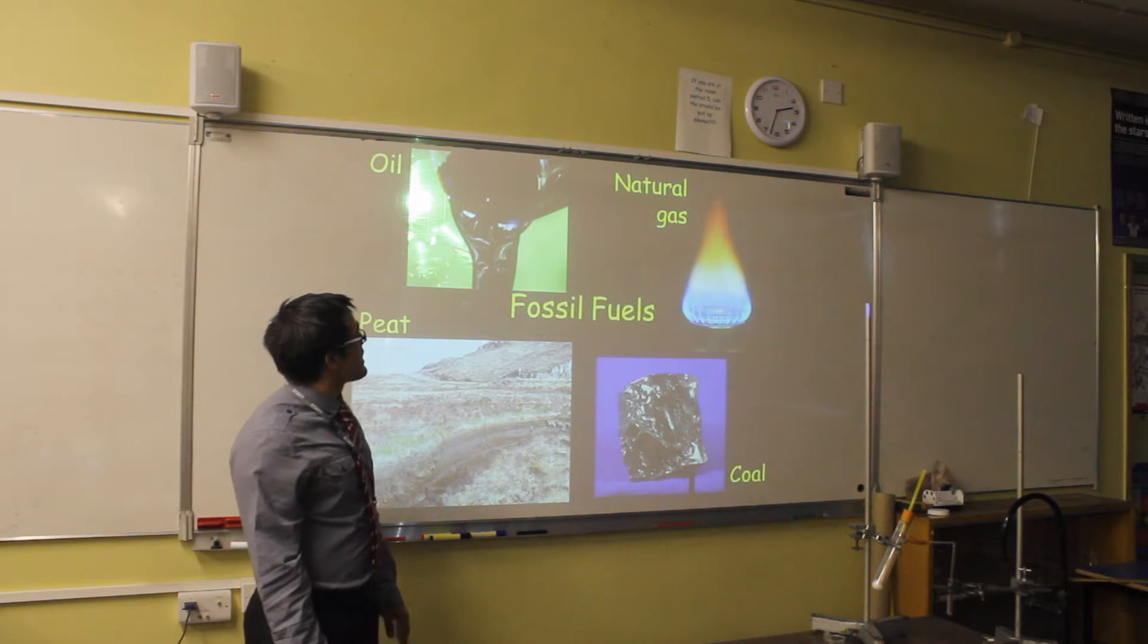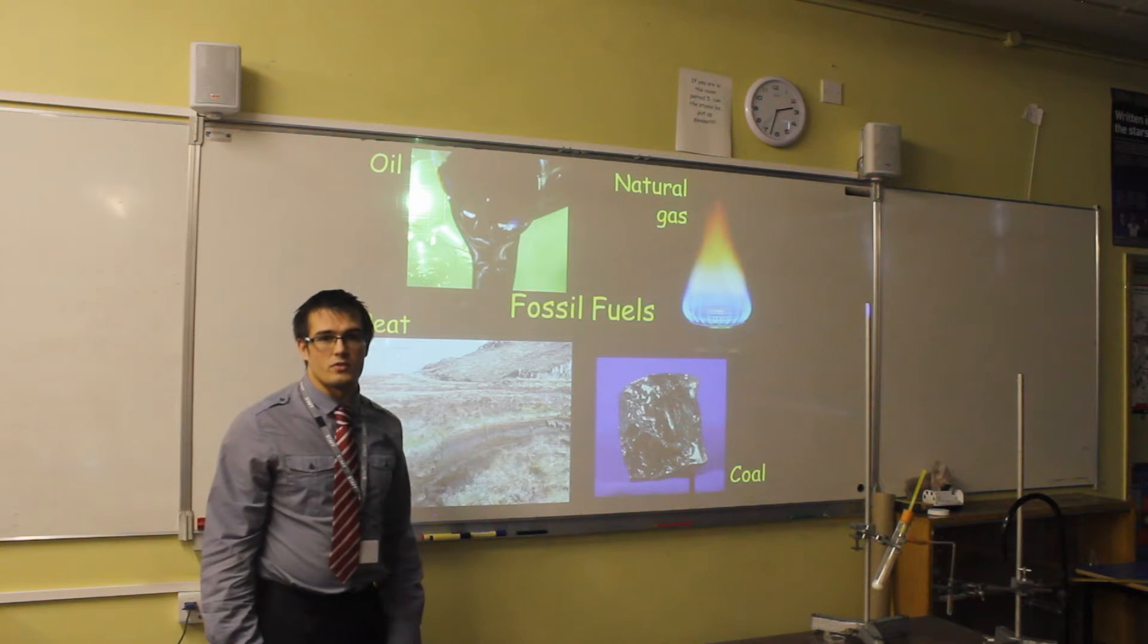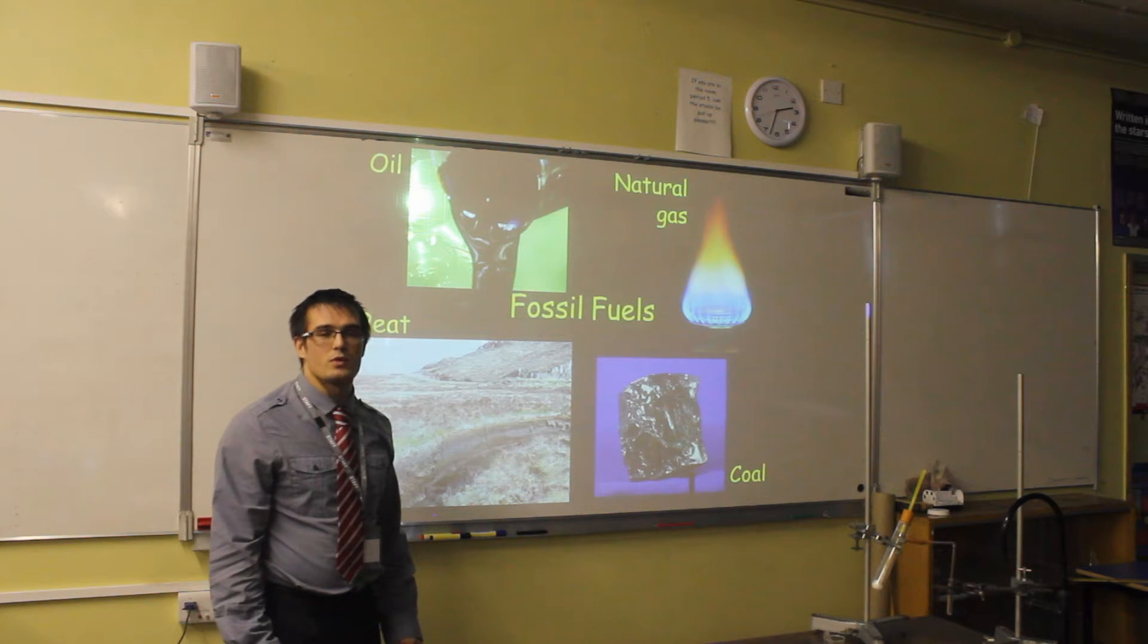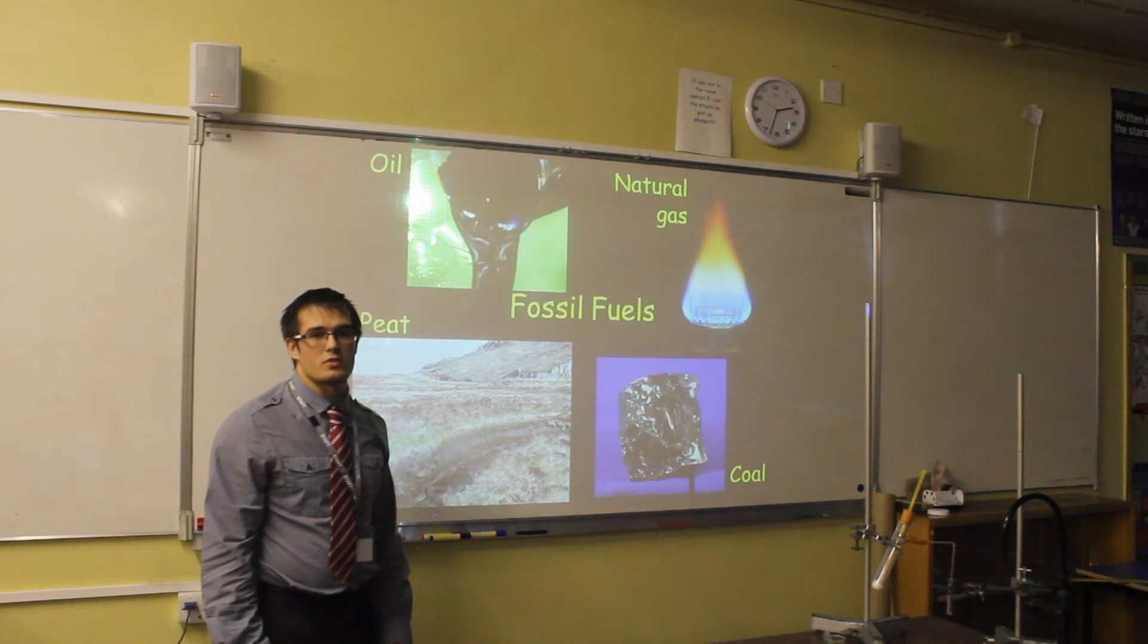The first part of this lesson is to understand that oil, natural gas, peat, and coal are examples of fossil fuels. This means that they are non-renewable energy sources which will run out. This means that they cannot be replaced within our lifetime, and that there is a finite amount of resources.